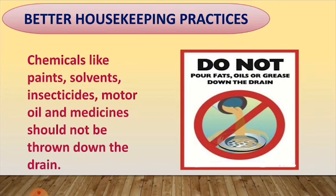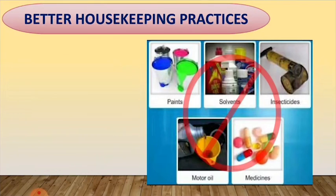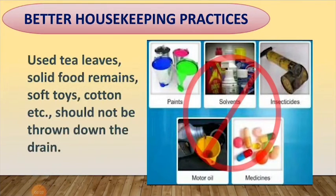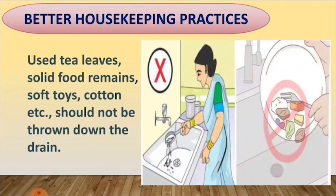Chemicals like paints, solvents, insecticides, motor oil, and medicines should not be thrown down the drain, as they may kill the useful microbes that help to decompose waste present in the sewage and purify water. Used tea leaves, solid food remains, soft toys, cotton, etc., should not be thrown down the drain either, as these items choke the drain and do not allow free flow of oxygen to the useful microbes. All solid waste should be thrown in the dustbin.